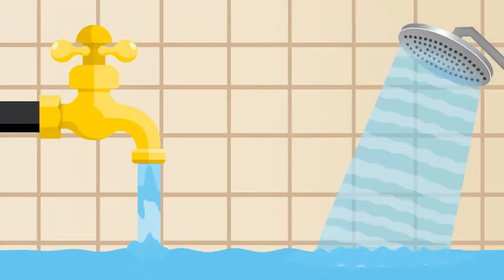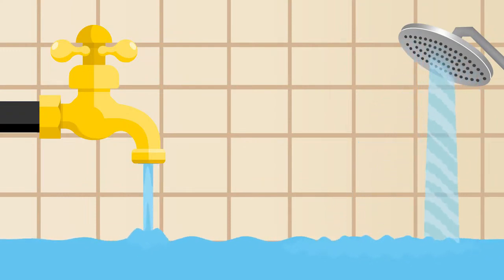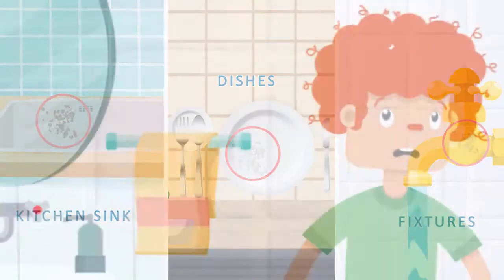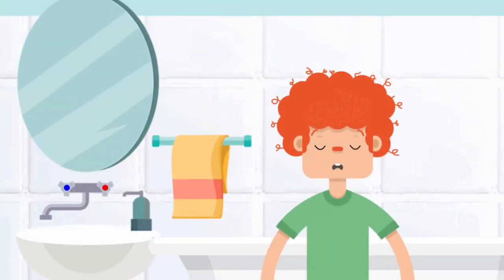Well, it might block your faucet and shower head. Stubborn spots occur on the surface of sink, dishes, bathroom fixtures. You might always get tangled hair after shower.